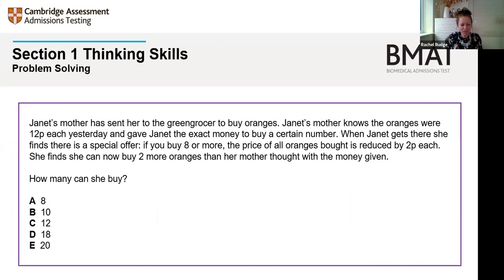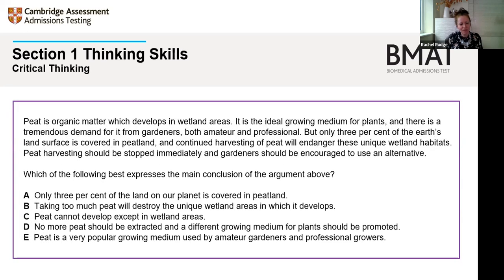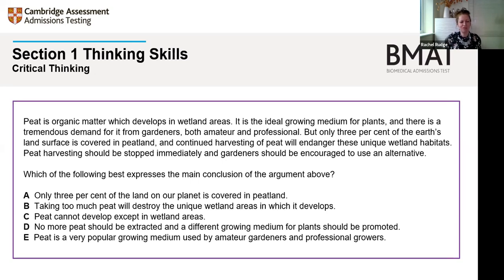The Thinking Skills section contains two question types. Problem solving questions test numerical and spatial skills — often it's not about solving complicated equations but having the thinking skills to work out the process to reach the right answer. Critical thinking questions present a paragraph of text putting forward an argument, and ask you to identify a conclusion, assumption, or flaw. You don't need any prior knowledge of any subject area — all the information you need is within the question.